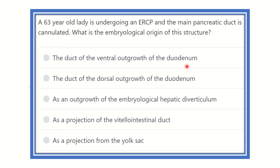Hello everyone, welcome to another question. A 63-year-old lady is undergoing an ERCP and the main pancreatic duct is cannulated. What is the embryological origin of this structure? The main pancreatic duct is cannulated during the ERCP procedure, and we have to find out its embryological origin.